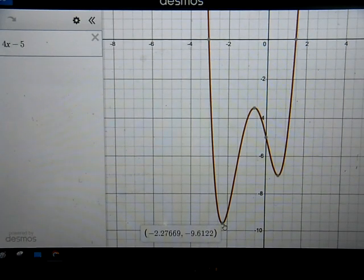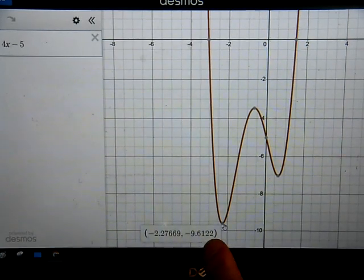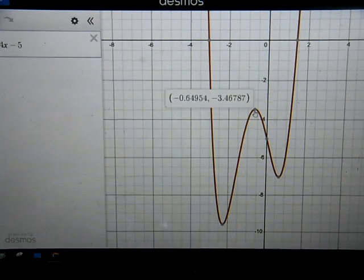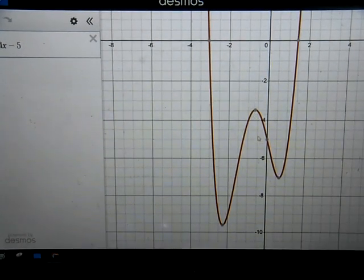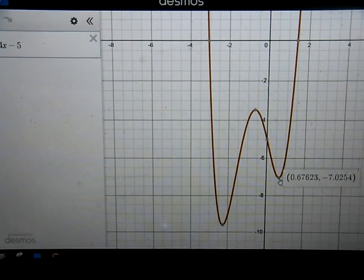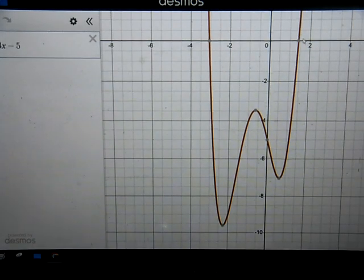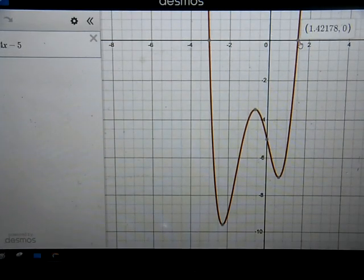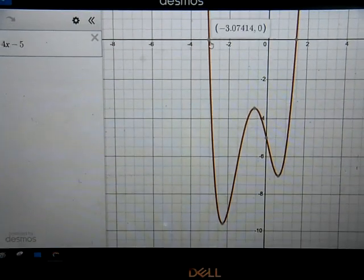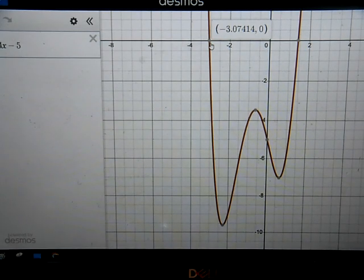So these are all called critical points. This is called a local minimum. So we're going to look for this value, the local minimum. We'll often consider it a coordinate. There's your local maximum. This happens to be your y-intercept. Here's your local minimum again. And then, of course, your two x-intercepts, your two zeros of the function. So Desmos makes it real easy to find those. That's the advantage of Desmos.